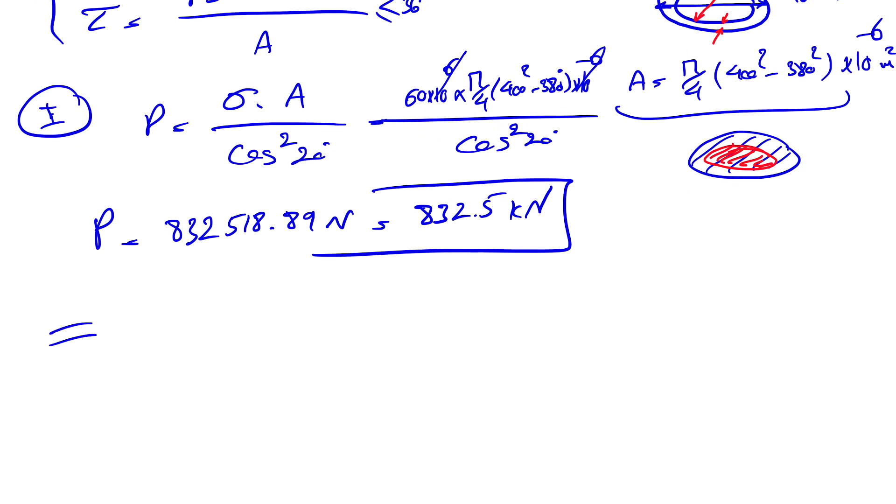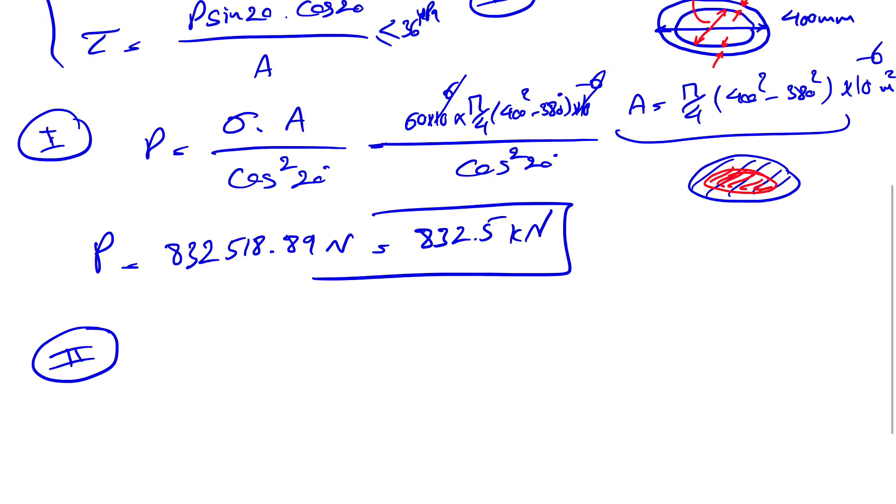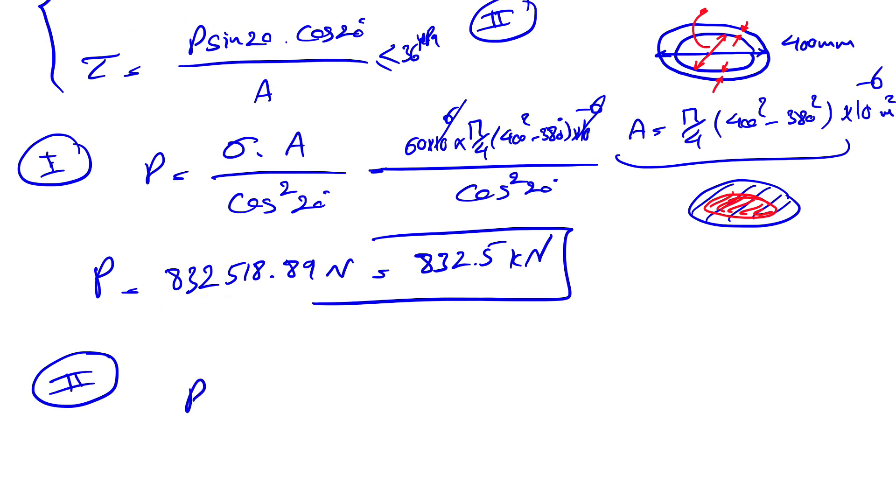Let's go with the second scenario and see what we get from our shearing stress. So for that, our P would be shearing stress times A. And on the denominator, we have sine of 20 degrees times cosine of 20 degrees.